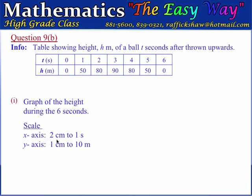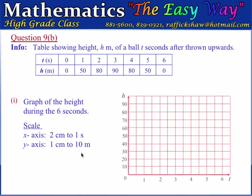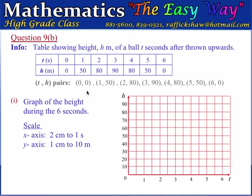The first part wants us to draw a graph showing the height of the ball during the 6-second period. On the x-axis, we use 2 centimeters to represent 1 second, placing time on the x-axis. On the y-axis, we use 1 centimeter to represent a height of 10 meters. We need to identify the set of ordered pairs — consisting of time and height — that we will plot from the table.